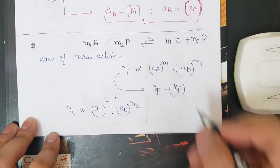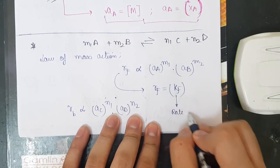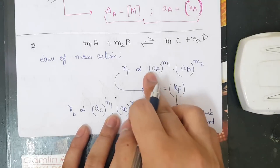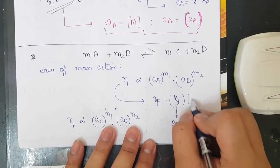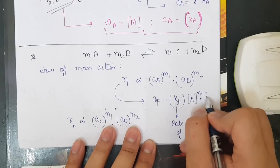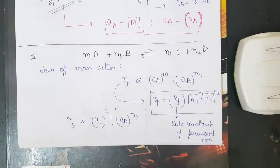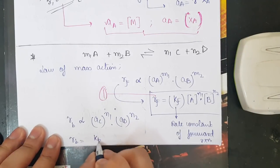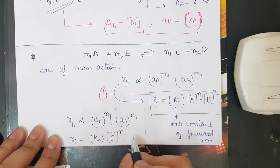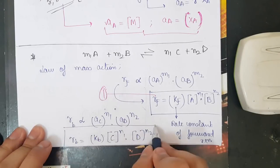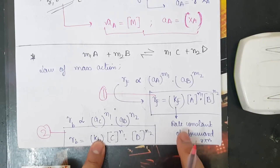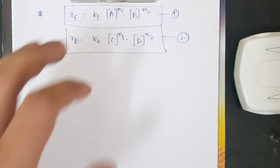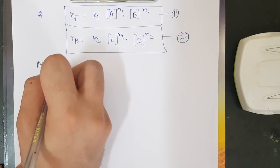Removing the proportionality constants, we get: Rf = kf × [A]^m1 × [B]^m2 (equation 1), where kf is the rate constant of the forward reaction. And Rb = kb × [C]^n1 × [D]^n2 (equation 2), where kb is the rate constant of the backward reaction.